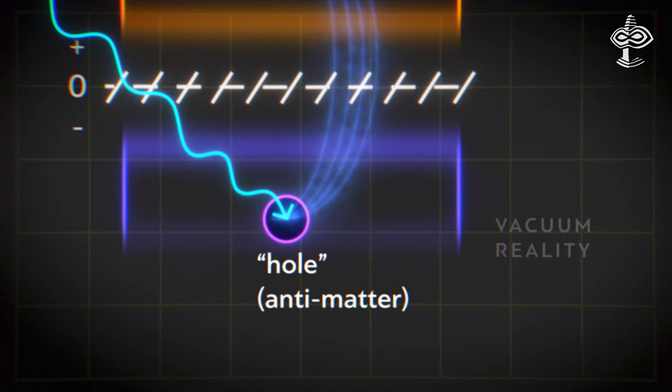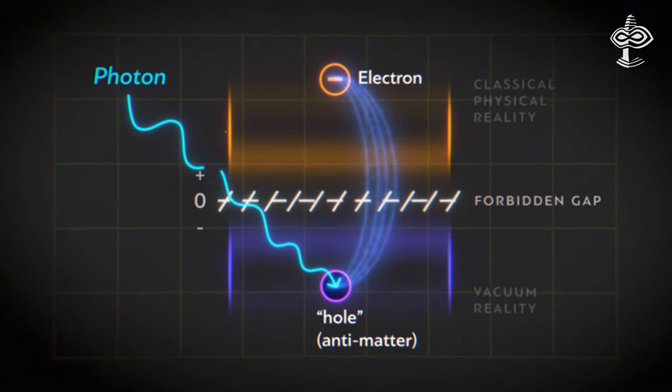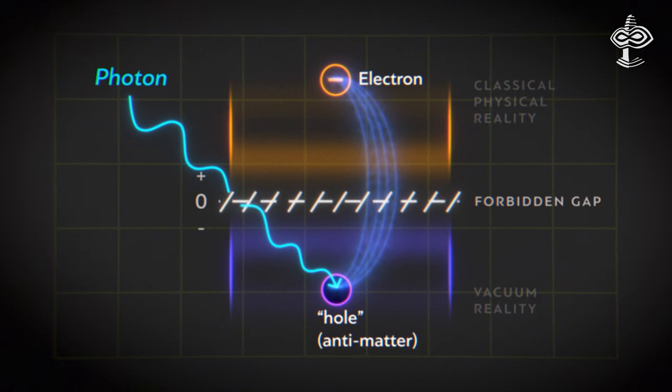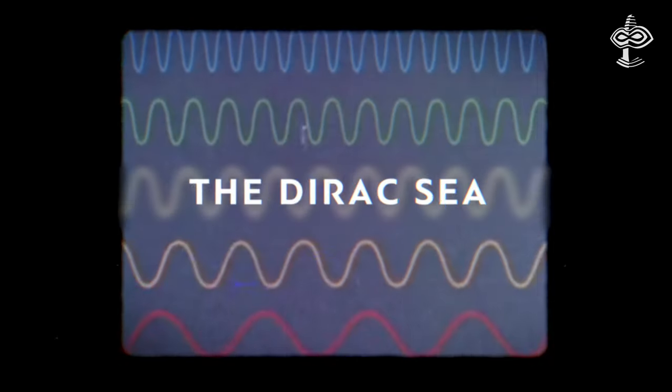This hole behaves like the opposite of the electron, which we call antimatter. Thus, Dirac proposed that we live in a sea of virtual, unobservable via our present-day instrumentation, stuff, particles, or waves, the Dirac Sea.